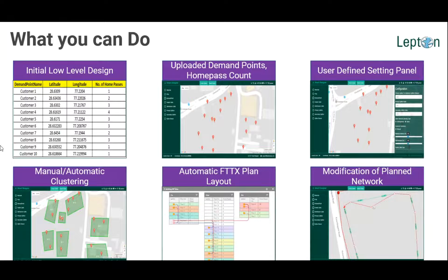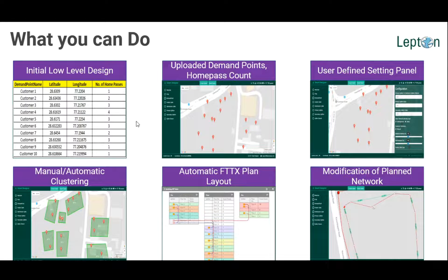The key features: on the top left corner, what is shown is the customer input to the tool — it could be the customer locations, the lat-long and the number of homes passed. It takes input in either an Excel sheet, a CSV file, or a shapefile depending on your choice. Once it loads into the system, it shows all the home passes to be used in the design. On the right is the configuration where you can configure all your engineering rules. Then it does the clustering: you specify where your OLT is, and based on the engineering rules it performs automatic clustering based on splitter ratios using optimal least-cost methods.